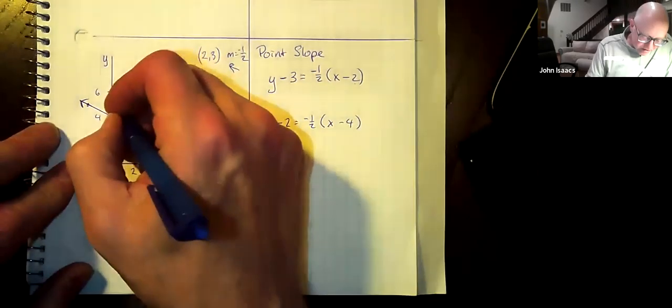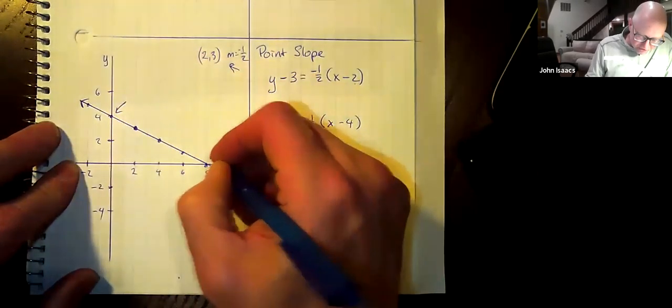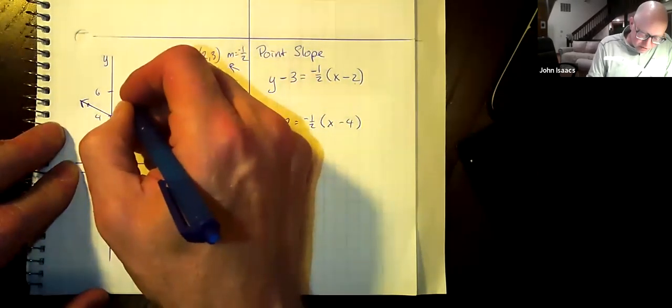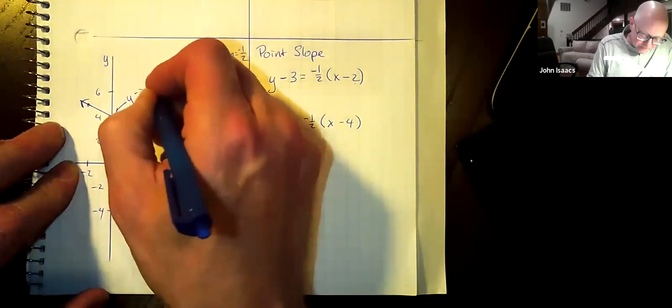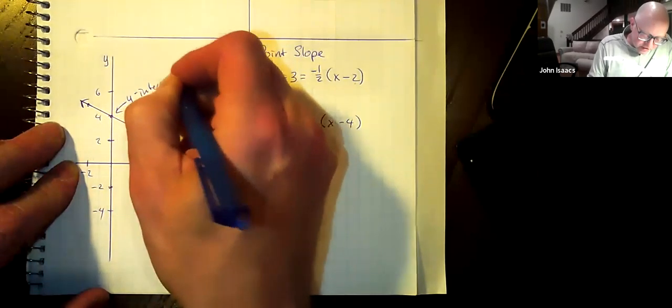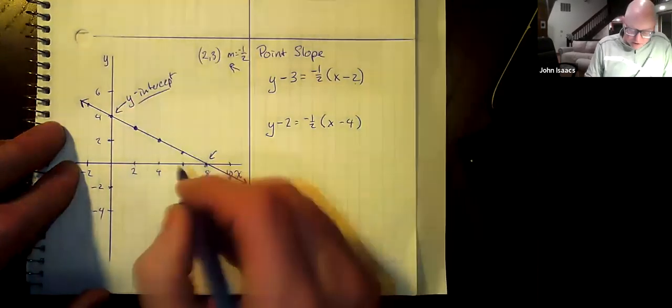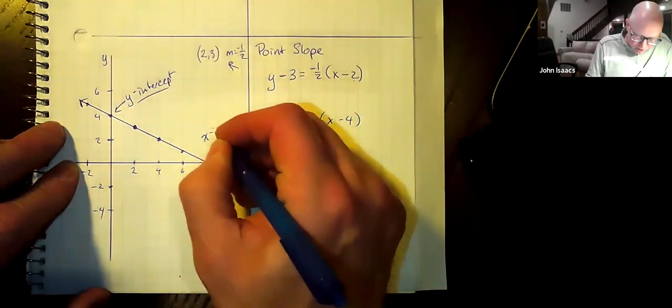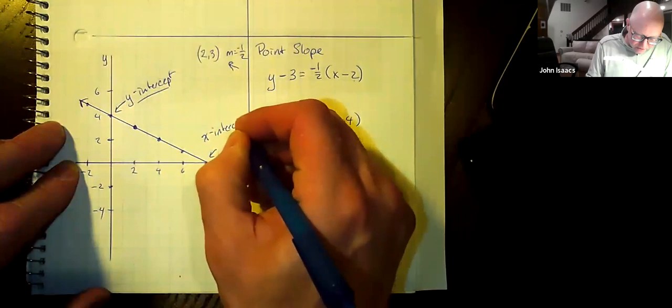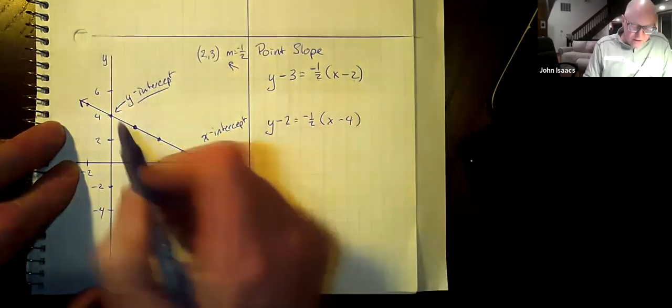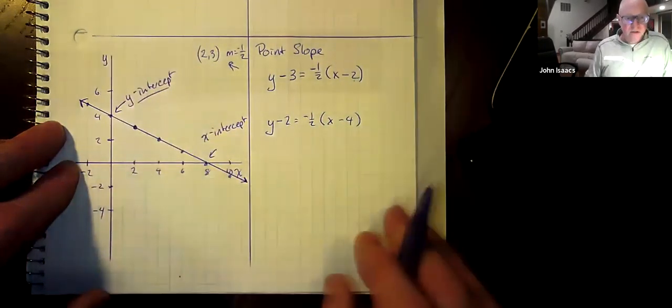Or we could use these points that are called intercepts. So this is the y-intercept - I don't know that we've used that terminology yet, we probably have. And this is called the x-intercept. The x and y-intercepts are locations where the graph crosses the y-axis or the x-axis.